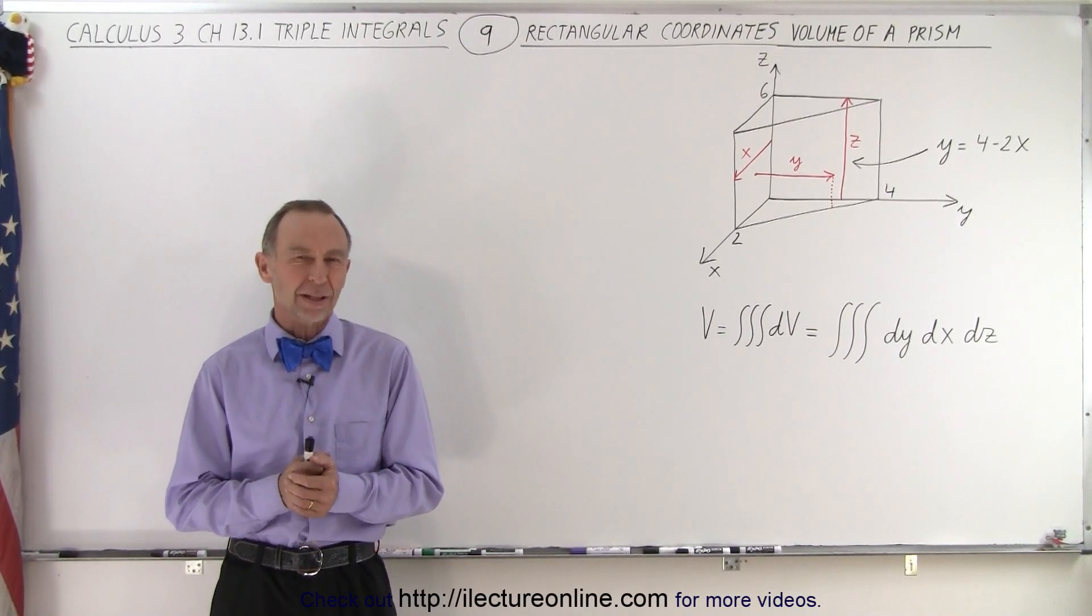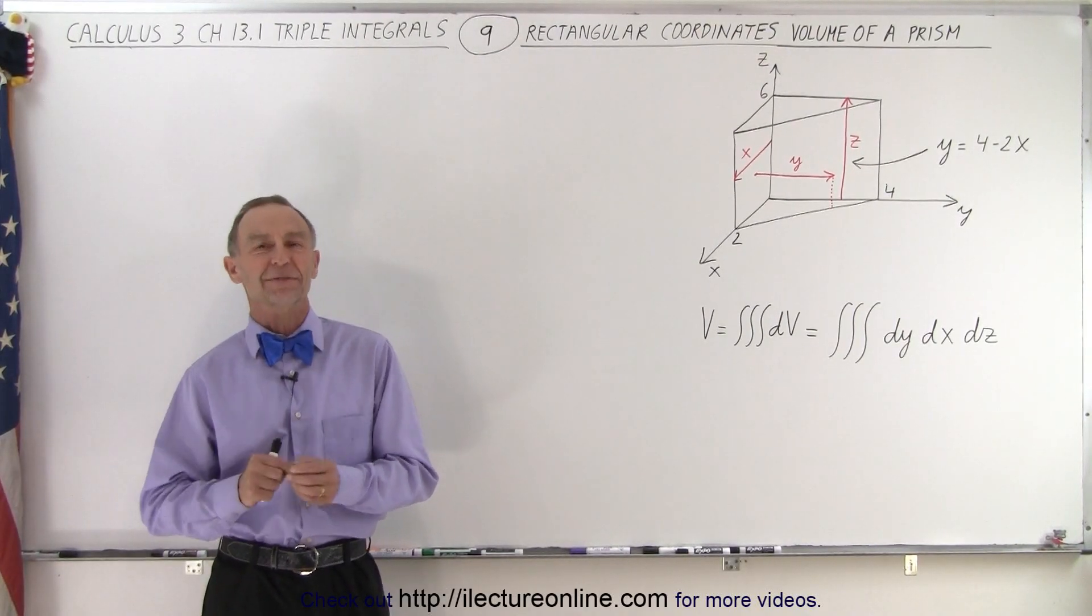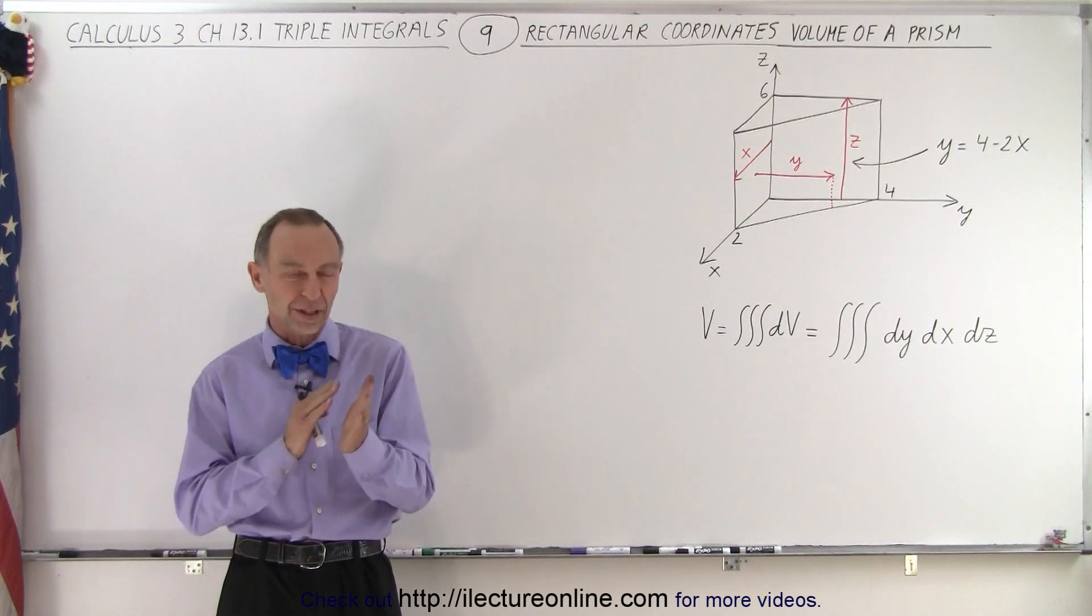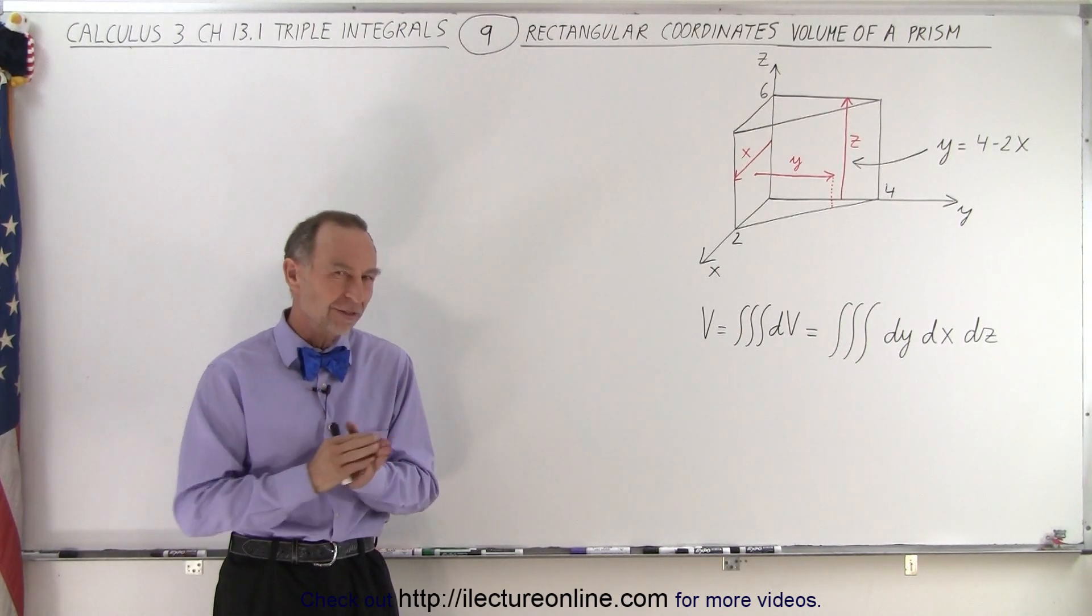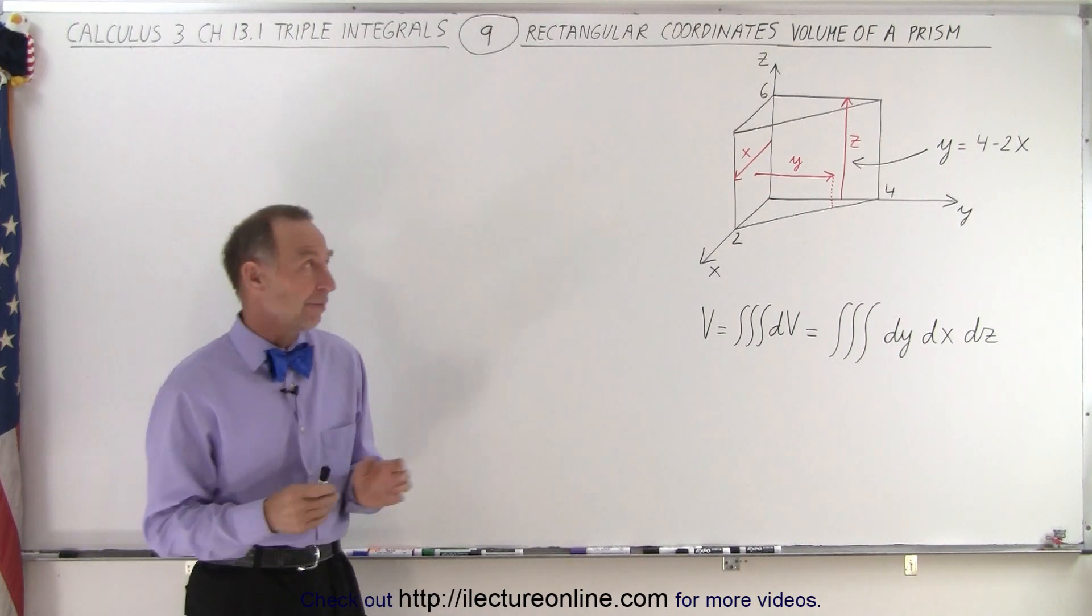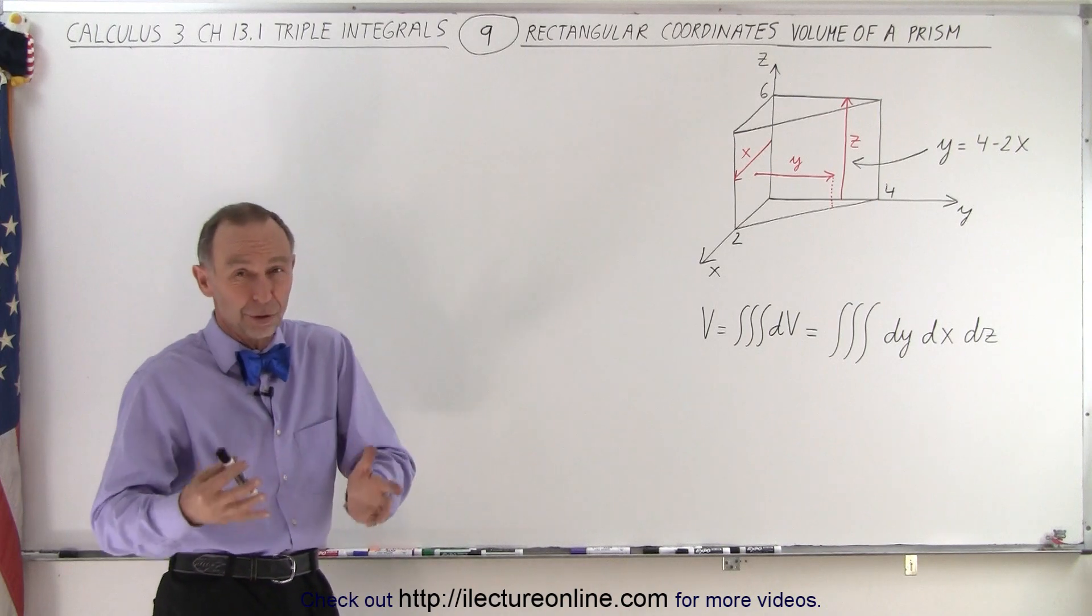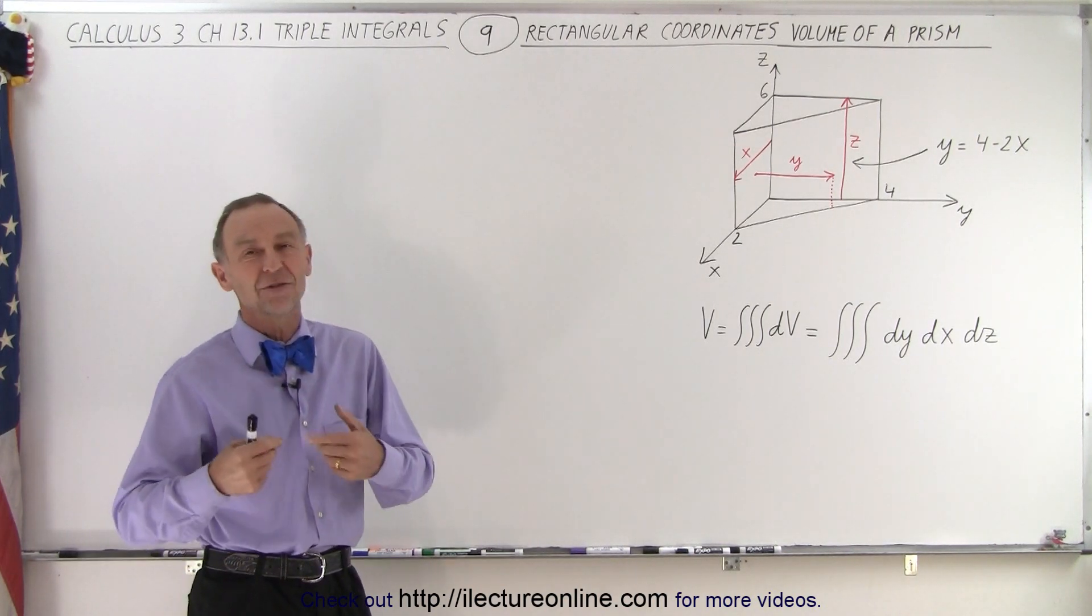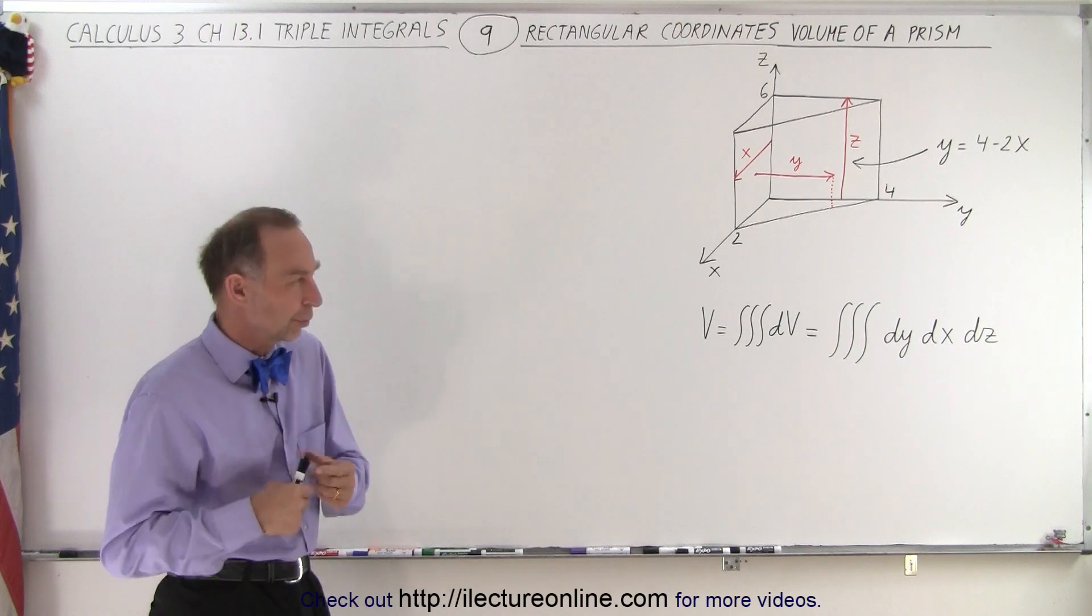Welcome to our lecture online. Now let's try something slightly more difficult than the previous video. Here we have a prism. You can see that one of the sides is slanted, and we're trying to find simply the volume of this prism. Now obviously we don't need to do a triple integral to do that. You can very easily use some geometry, but this is just an illustration so we can learn how to do this.